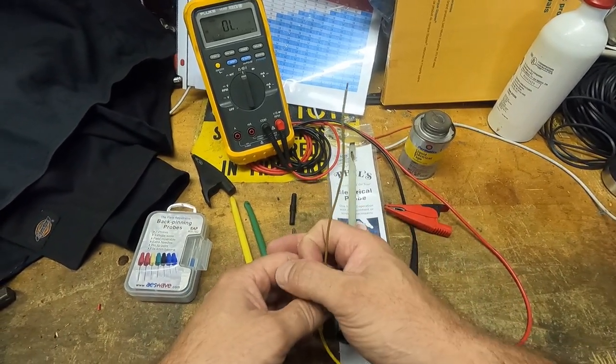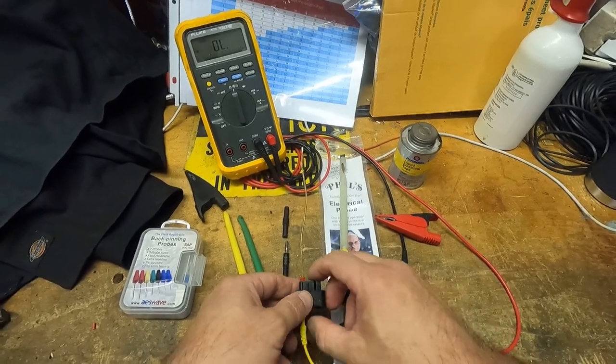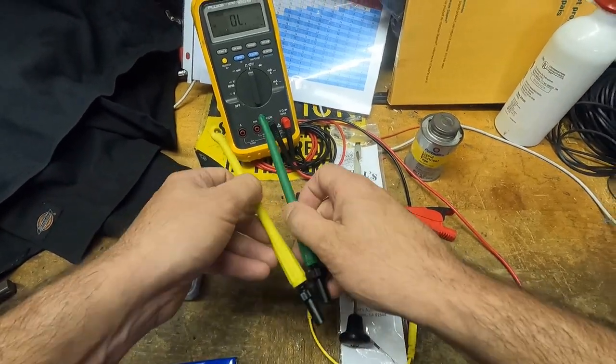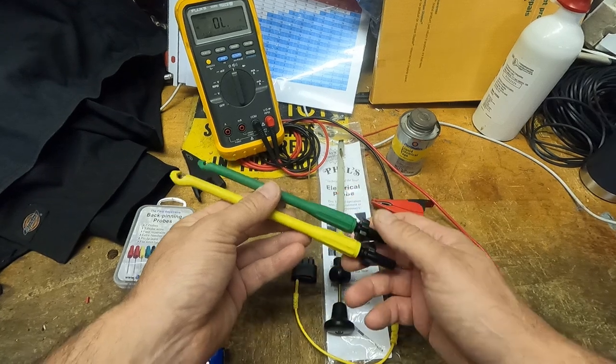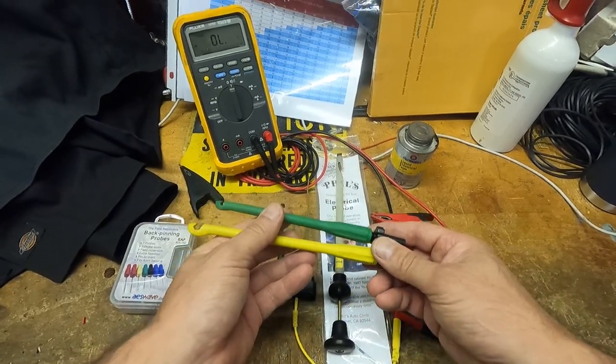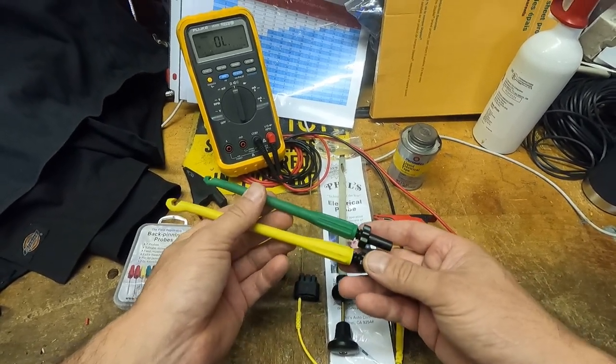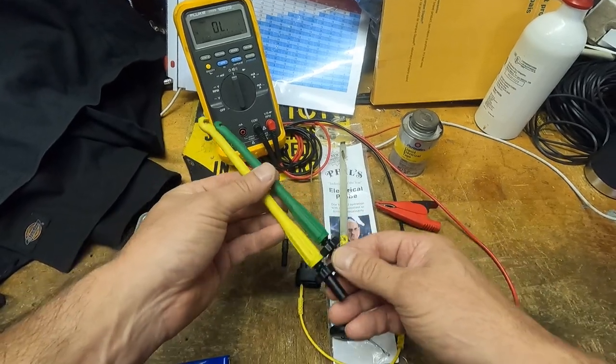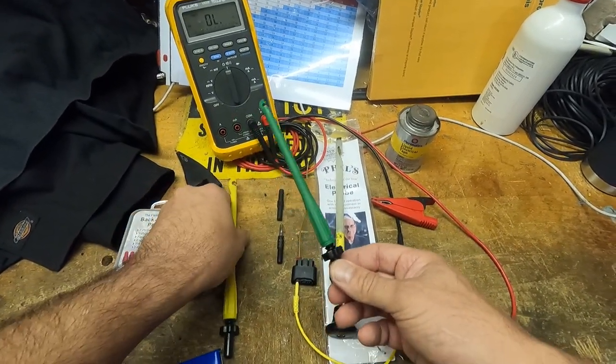To do that, unfortunately, you have to go with some insulation piercers. These are made by Power Probe. I like them, they're all right. So I'll give an example of how we would use those.